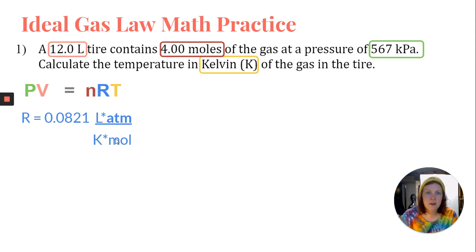So that's 0.0821 liters atm per Kelvin mole. Now, there's a big problem with that. Remember, guys, if we don't have atm, we can't use that value. So we have kilopascals. We need to convert kilopascals into atm.